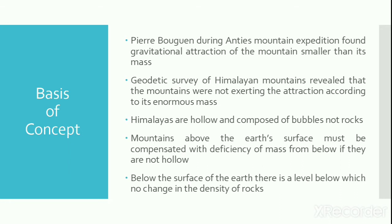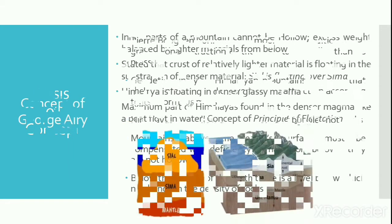It was also proposed that in the interior of the earth there is a level below which there is no change in the density of rocks. The density will change and vary above this level only. All the columns or any land masses at this level will have an equal mass. It was therefore suggested that bigger the column, lesser the density, and smaller the column, the greater will be the density.